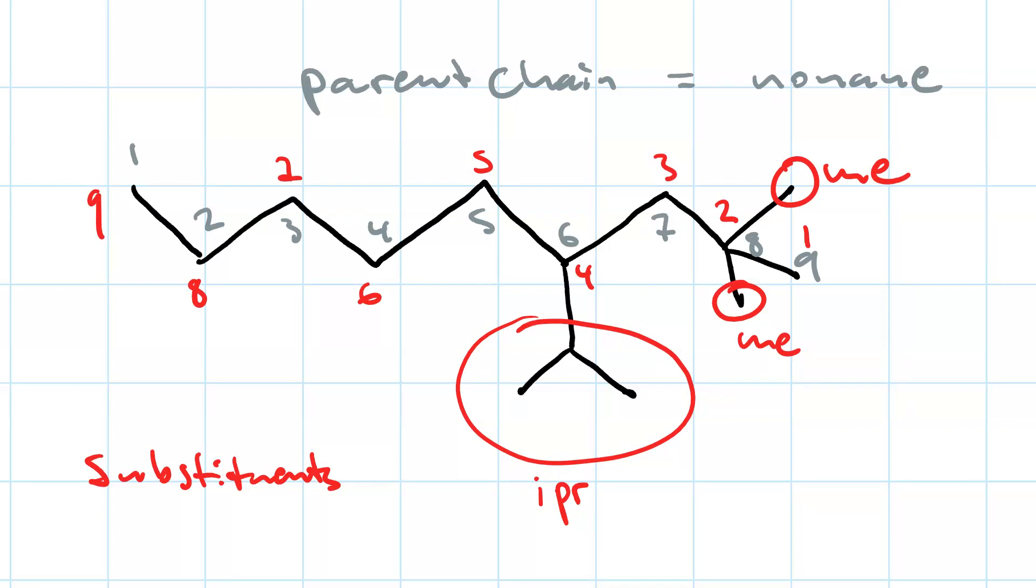If we numbered left to right, our locants would be six, eight, and eight, which is not nearly as good as numbering right to left. Our right to left locants are two, two, four. And when you're trying to decide, it's always the first locant lowest wins. So two is lower than six. If the first locant is a tie, then you go to the second locant. If the second locant is a tie, you go to the third, and so on and so forth.